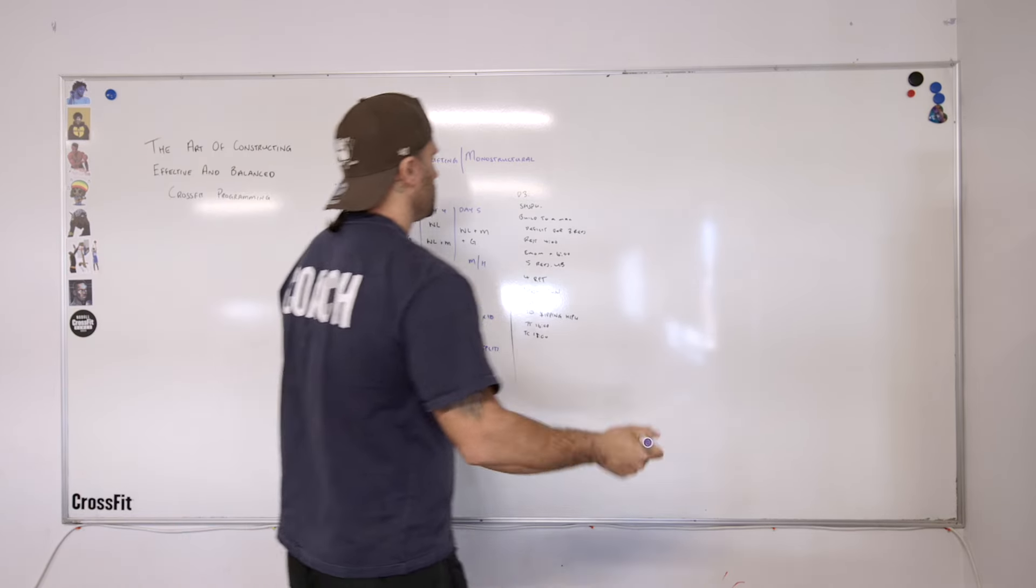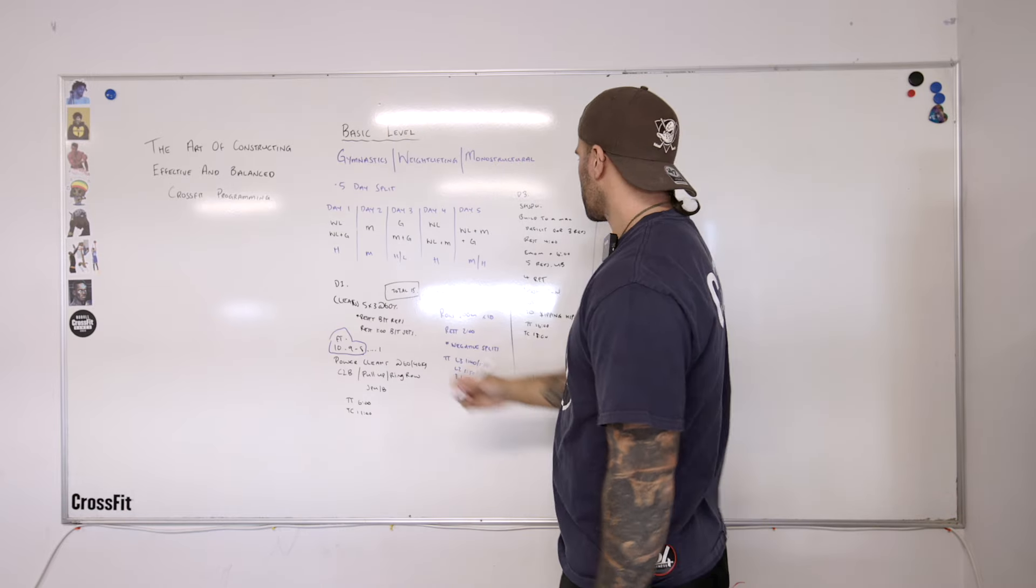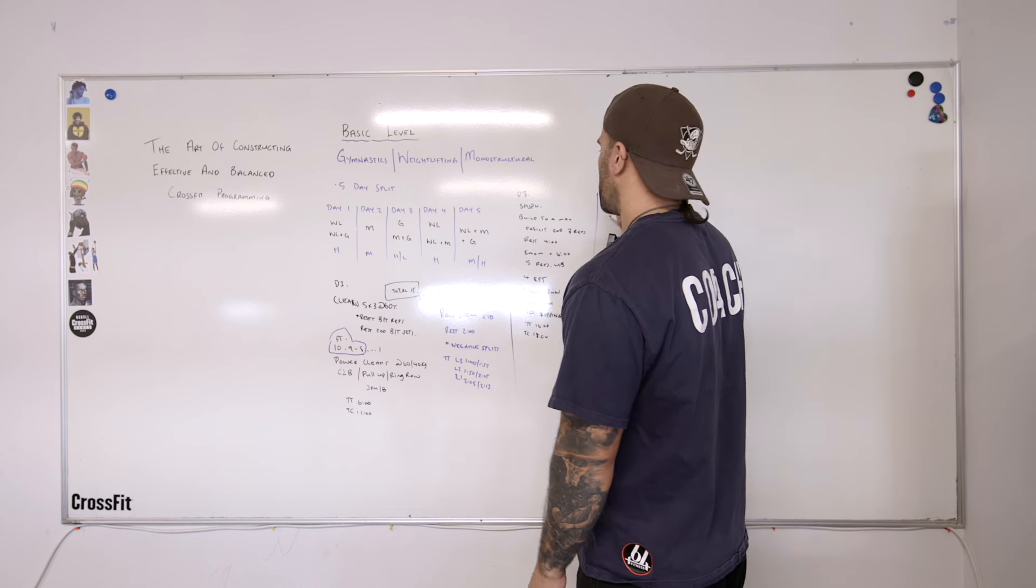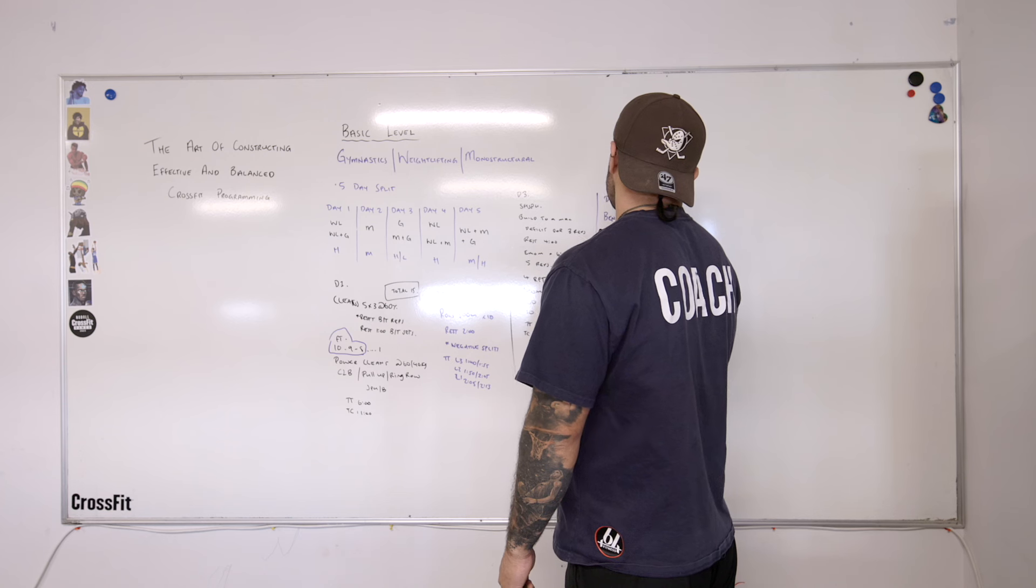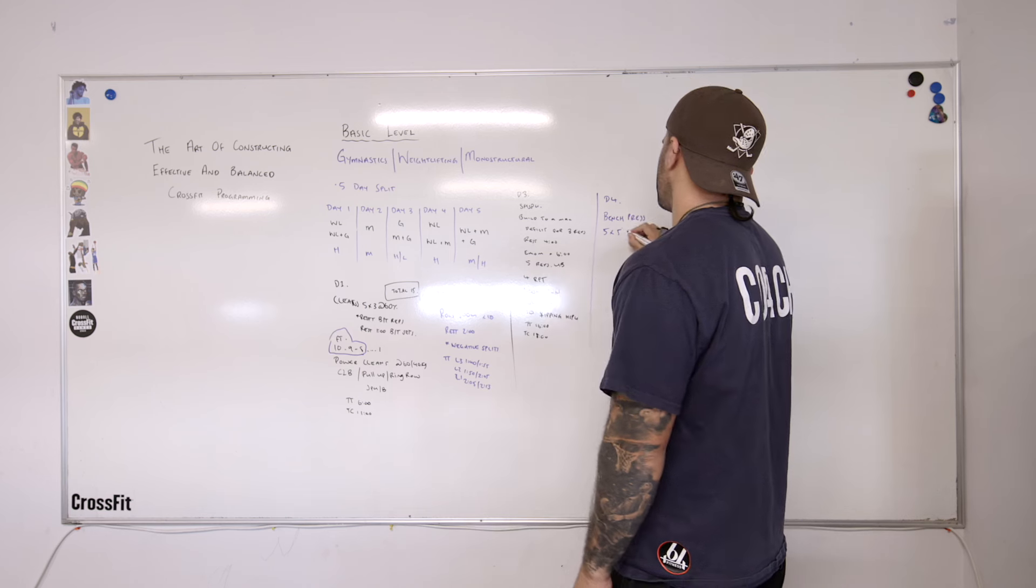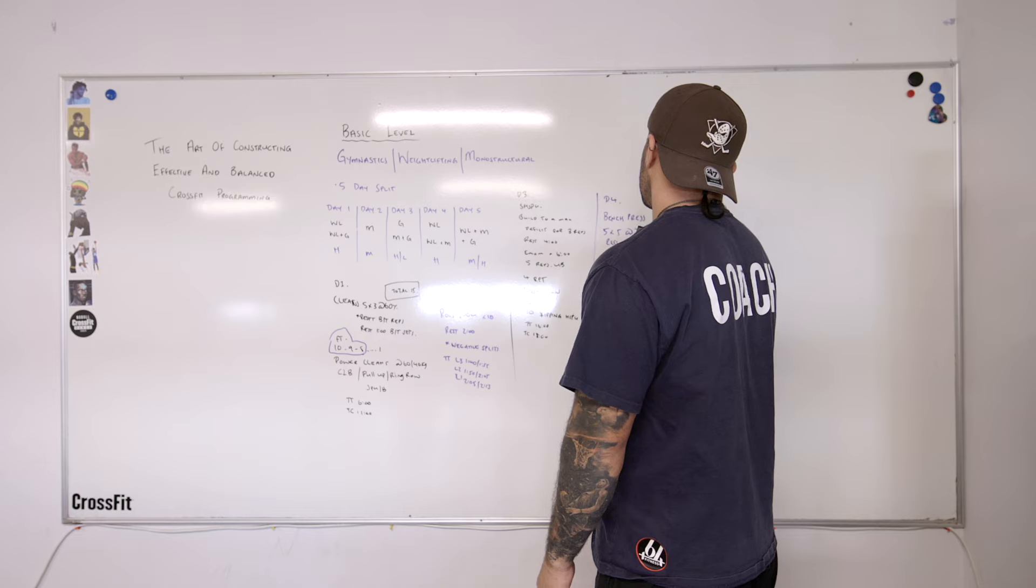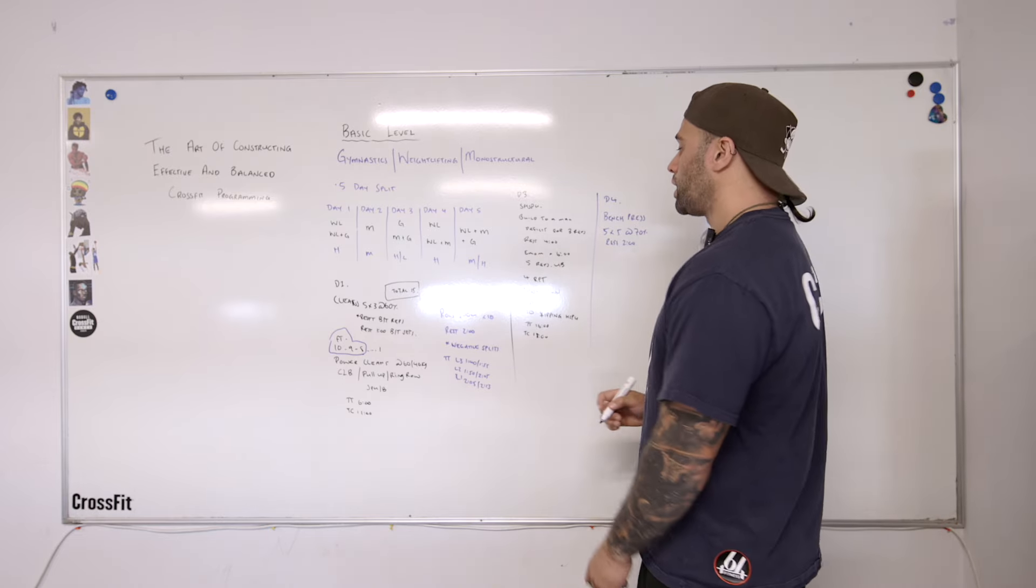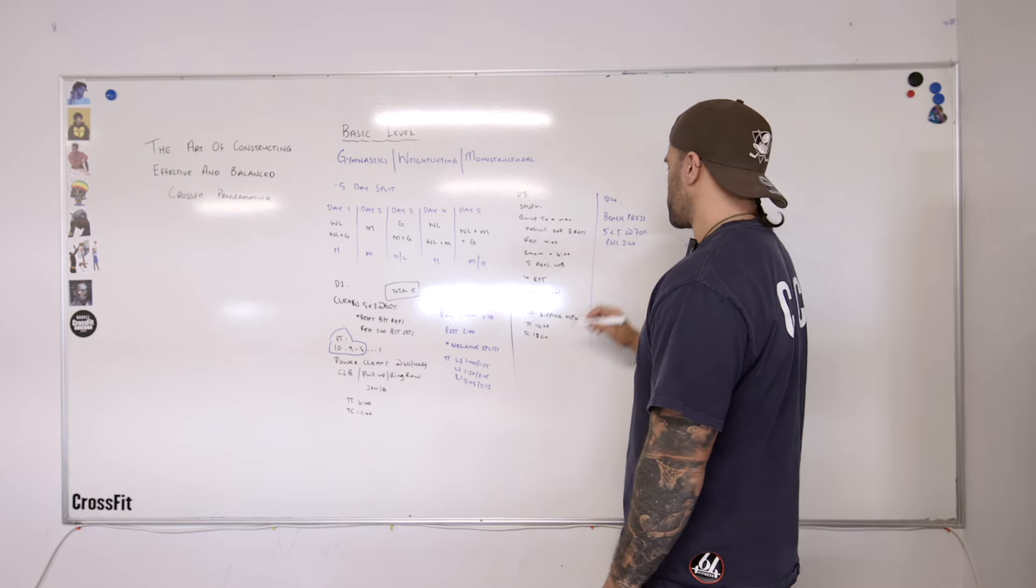Moving on to day four, weightlifting. We done cleans on day one. We might do some snatches or, let's go with bench press. Everyone loves a bench press. Nice and easy construct for strength. Five times five at 70%, rest two. Nice and simple. And then into the weightlifting plus monostructural component. We'll just come off of this big timeframe here.